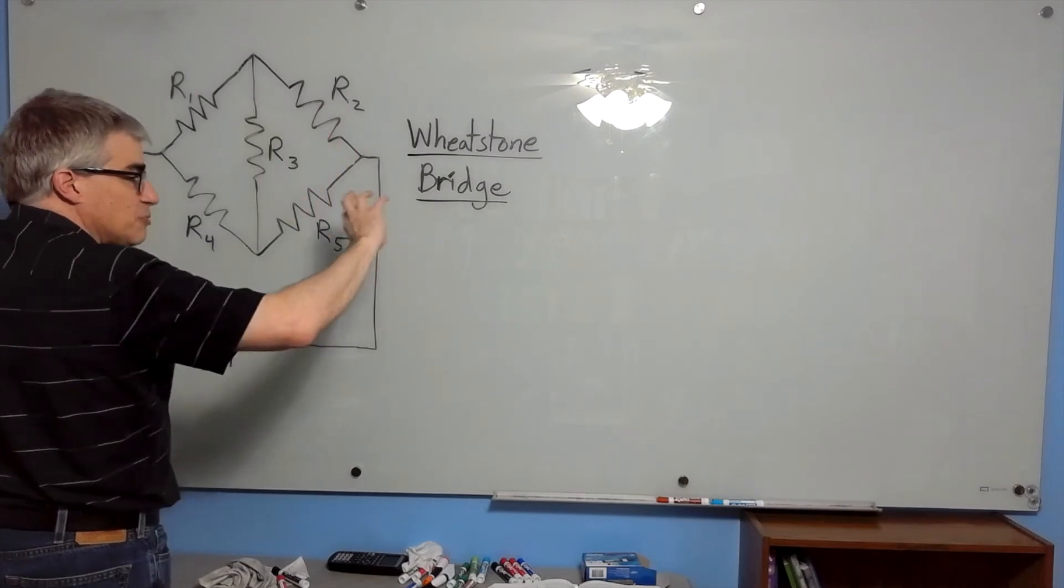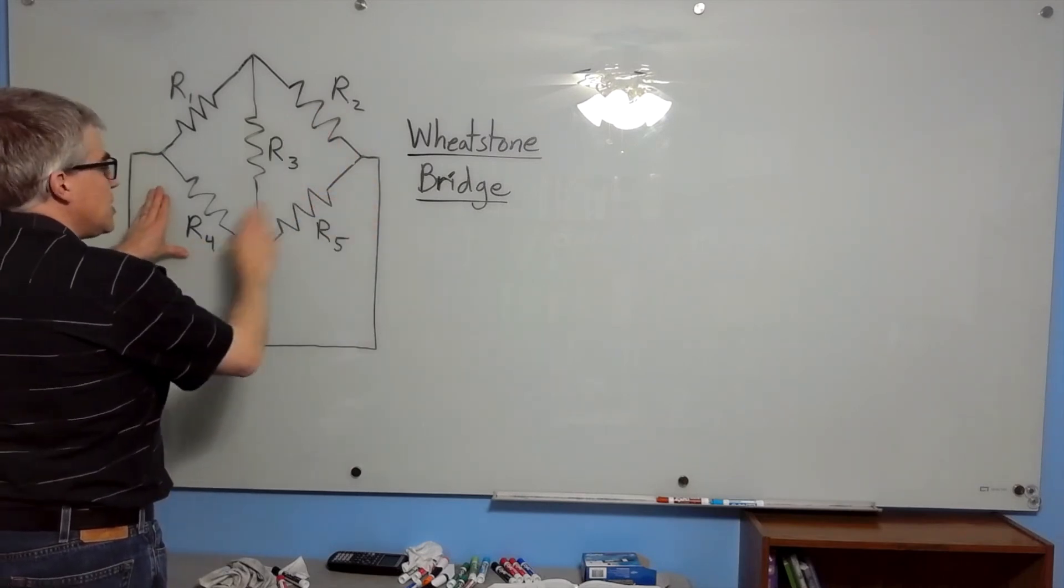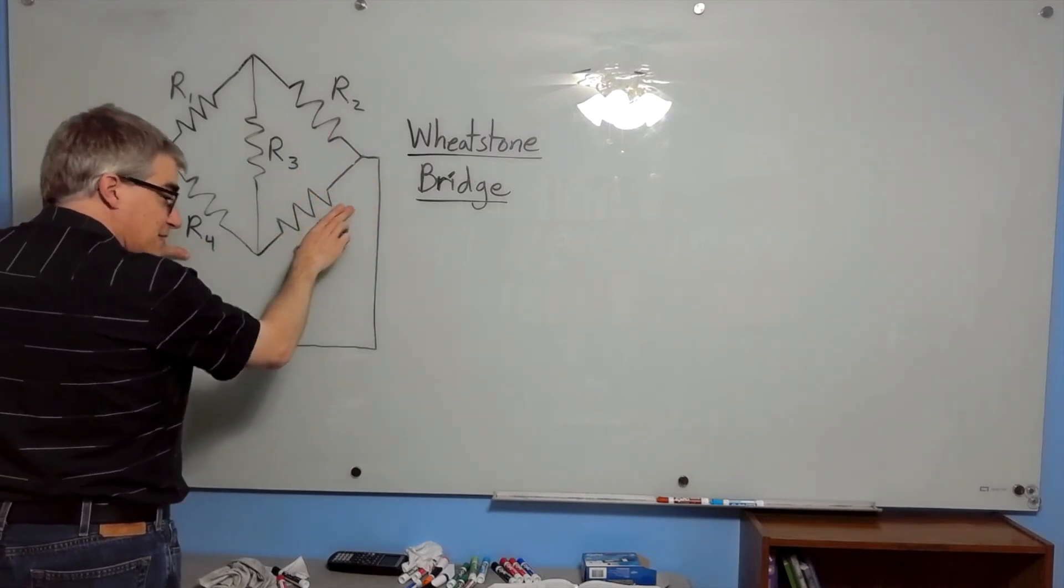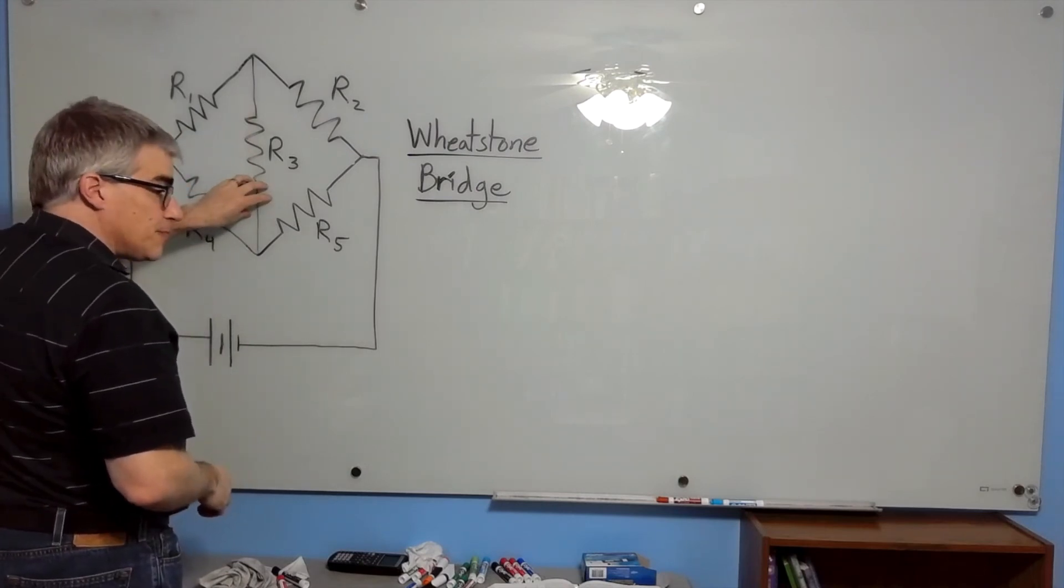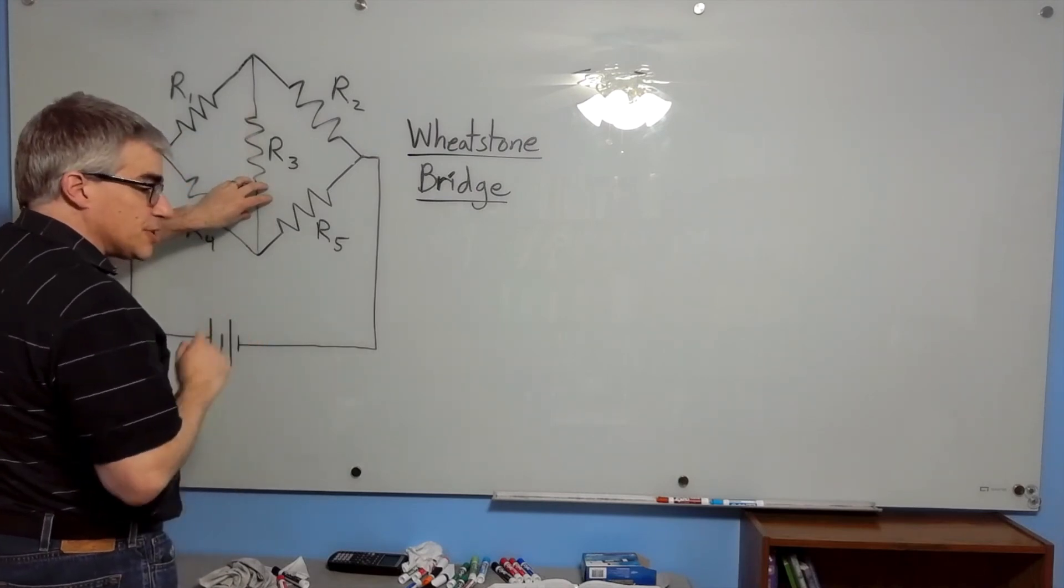And R2 has to be precisely adjustable. So then you put your unknown here where R5 is, and along R3 you put an ammeter, something that tells you how much current is running through it.